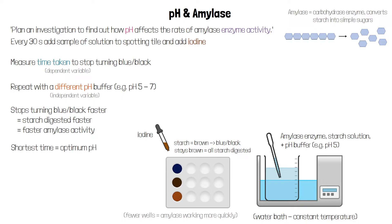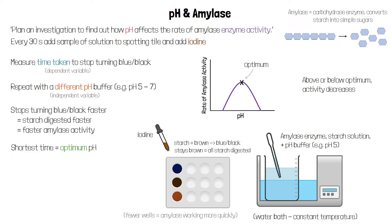The pH that takes the shortest time to stop turning blue-black is the optimum pH for amylase — this is the pH at which it works best, where the rate of enzyme activity is highest. Above or below the optimum pH the rate of activity decreases because enzymes are denatured. Different enzymes have different optimum pHs depending on the environment they're found in, such as the stomach or the intestine.